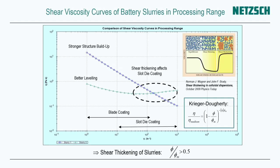These are typical shear viscosity functions of battery slurries in the processing region. On the x-axis, the shear rate runs from 1 to about 1,000 reciprocal seconds, covering blade coating and slot die coating. The blue curve shows a slurry with a shear thinning effect — viscosity decreases with increasing shear rate. The green curve shows another battery slurry exhibiting shear thickening — viscosity increases with increasing shear rate. Shear thinning and shear thickening are usually hard to understand intuitively, so here is a demonstration.